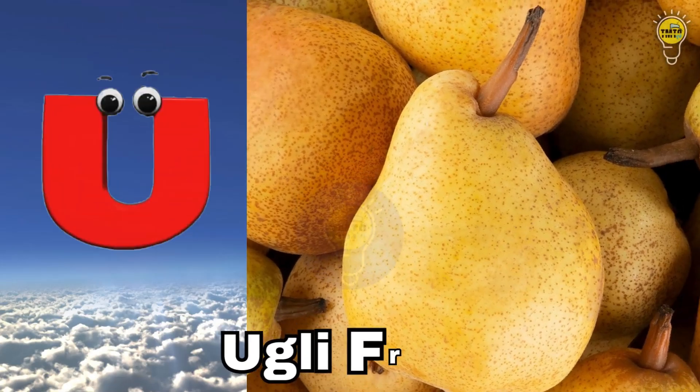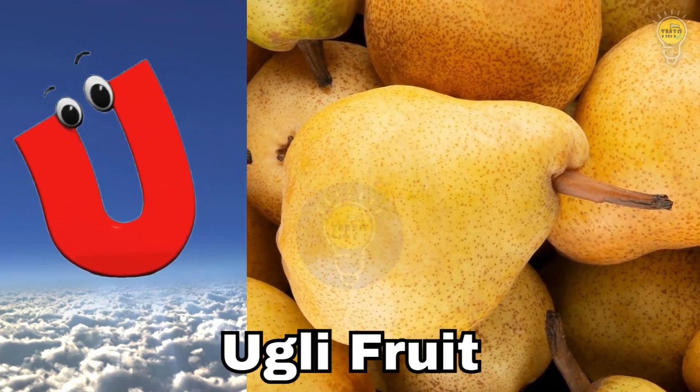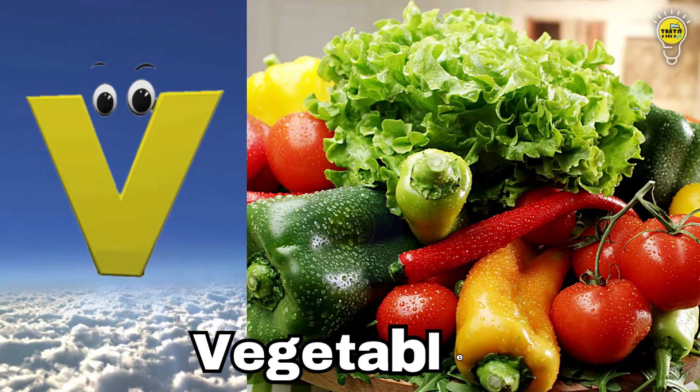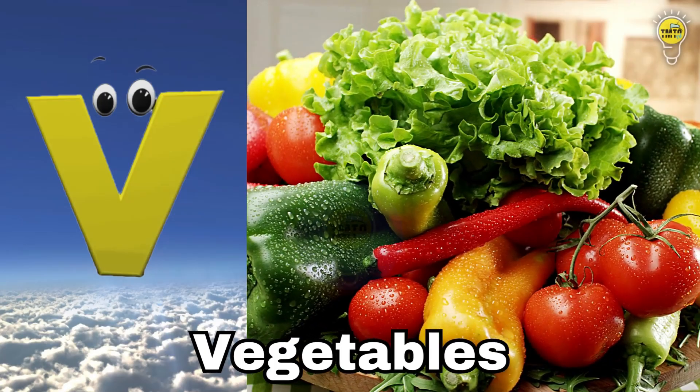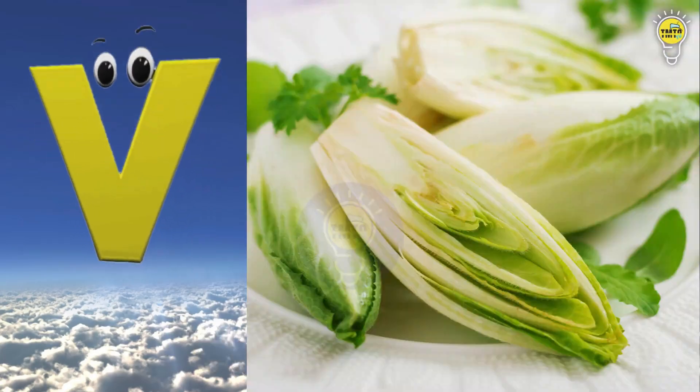U is for ugly fruit. U, u. Ugly fruit. V is for vegetables. V, v. Vegetables.